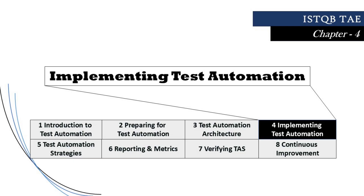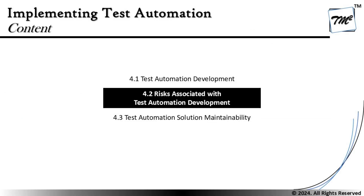Hello friends and greetings for the day. Welcome back to another tutorial on ISTQB Test Automation Engineer's Certification, where we are in Chapter 4 talking about implementing the test automation. As a part of this tutorial, we are stepping into section 4.2, talking about the risks associated with test automation development and understanding the varieties of risk we should consider and plan for mitigation.